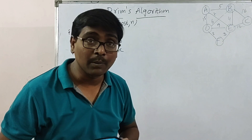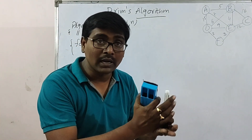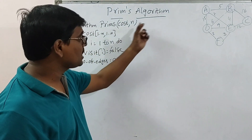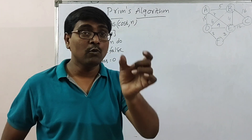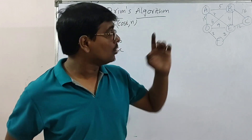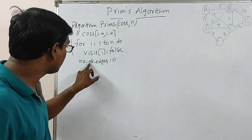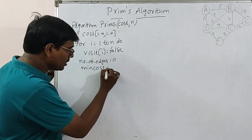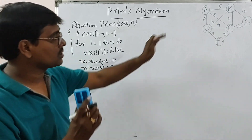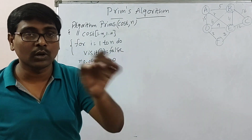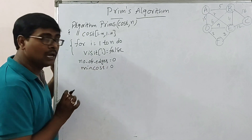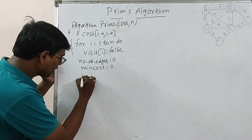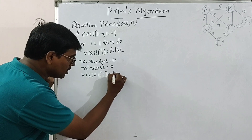Why 'number of edges'? Remember, if a graph has N vertices, the spanning tree consists of N minus 1 edges. So I continuously repeat the loop, and whenever we reach N minus 1 edges, there is no need to continue — that is the property of the spanning tree. I also use a variable 'minimum cost', initially 0, which stores the total cost after construction of the spanning tree. Then set visit[1] = true — consider any one vertex as the starting vertex. In our example, A is the starting vertex.